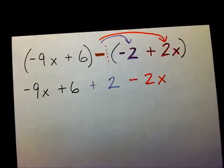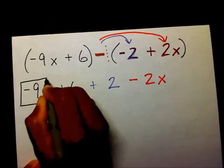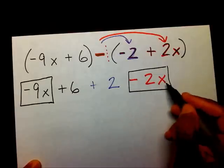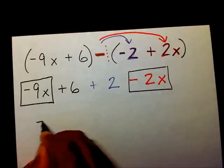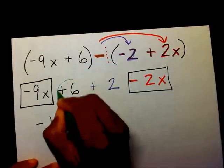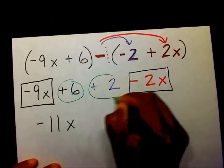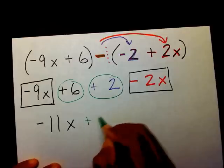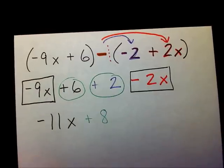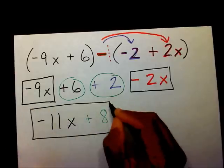Now I just need to combine my like terms. I have a negative 9x and a negative 2x — that leaves me with a negative 11x. Then I have a plus 6 and a plus 2, which leaves me with plus 8. So my final answer is negative 11x plus 8.